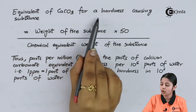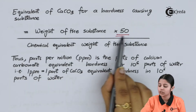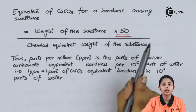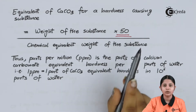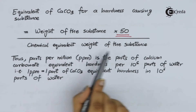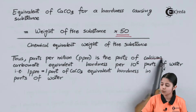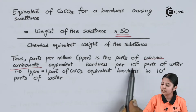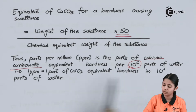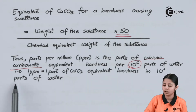The equivalent of CaCO3 for a hardness-causing substance is given by the formula: weight of the substance multiplied by the equivalent weight of CaCO3, divided by the chemical equivalent weight of the substance. Since the equivalent weight of CaCO3 is 50, we write it as: weight of substance × 50 / equivalent weight of substance. Thus, PPM is the parts of CaCO3-equivalent hardness per 10^6 parts of water. That is, 1 PPM corresponds to 1 part of CaCO3-equivalent hardness in 10^6 parts of water.